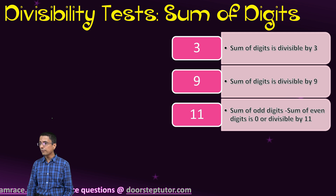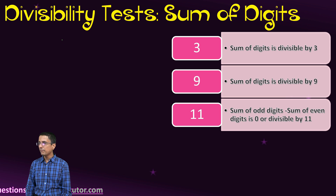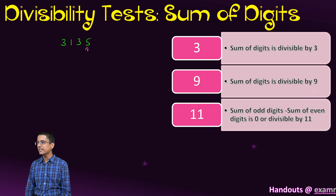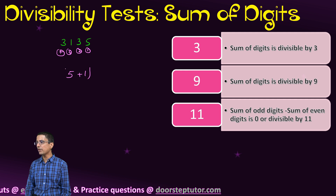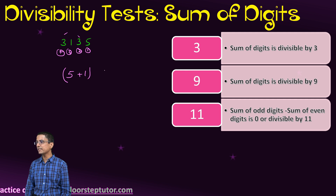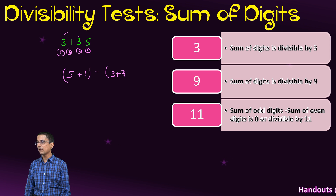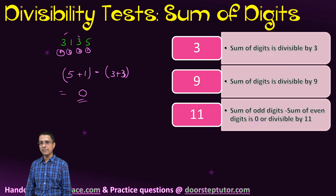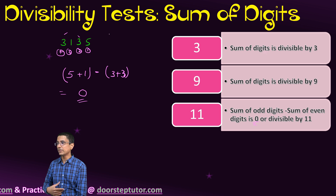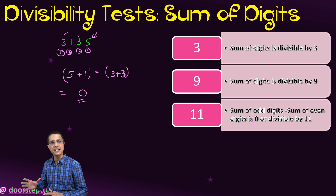Let us do the same exercise for a 4-digit number: 3, 1, 3, 5. We number the digits 1, 2, 3, and 4. The odd-positioned digits are at positions 1 and 3, giving 5 plus 1. The even-positioned digits are at positions 2 and 4, giving 3 plus 3. I subtract the two sums from each other and the answer comes out to be 0. Since the difference is 0, the number 3135 is divisible by 11.